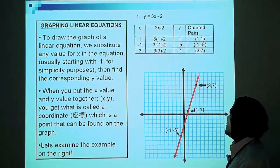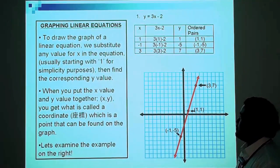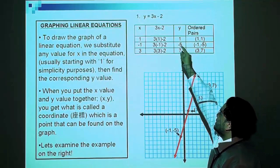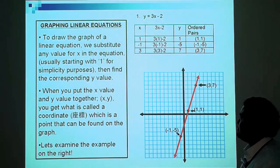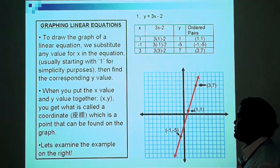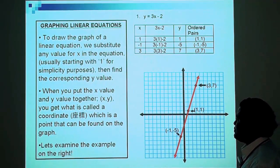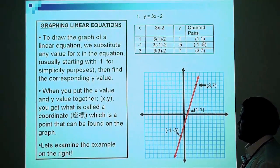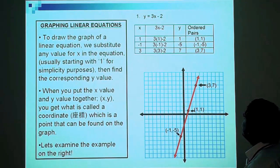Graphing linear equations. To draw the graph of a linear equation, we substitute any value for x in the equation, usually starting with 1 for simplicity purposes, then find the corresponding y-value. When you put the x-value and y-value together, you get what is called a coordinate, which is a point that can be found on the graph. Let's have a look at this example.